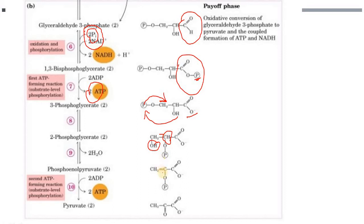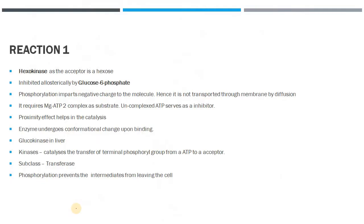A double bond is introduced to form phosphoenolpyruvate. The last step is the formation of pyruvate, catalyzed by the enzyme pyruvate kinase, where ATP is generated from PEP. The bond is balanced by introducing a double bond, resulting in the formation of two molecules of pyruvate. This concludes the payoff phase.